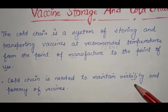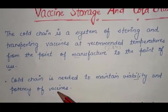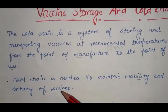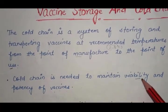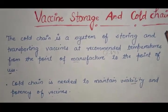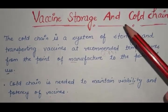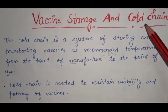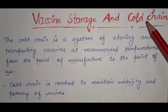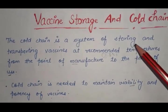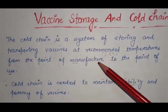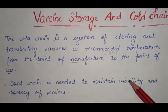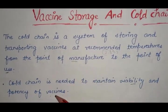Cold chain is needed to maintain viability and potency of vaccines so that vaccines cannot be destroyed. Some vaccines are heat sensitive, some are cold sensitive. So we have to maintain the cold chain to maintain viability and potency of vaccines.